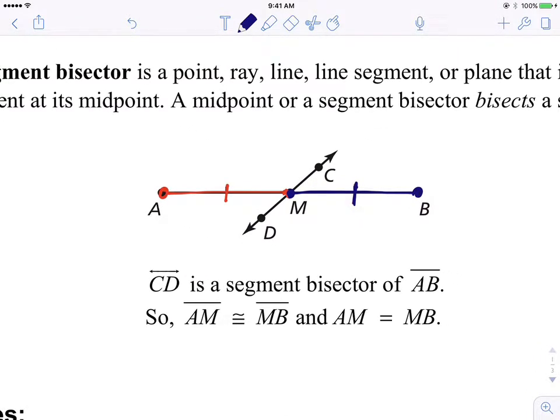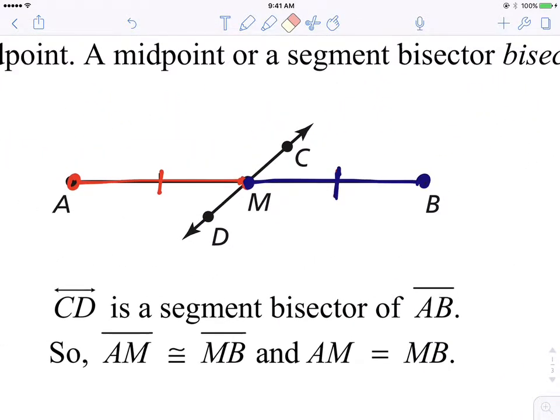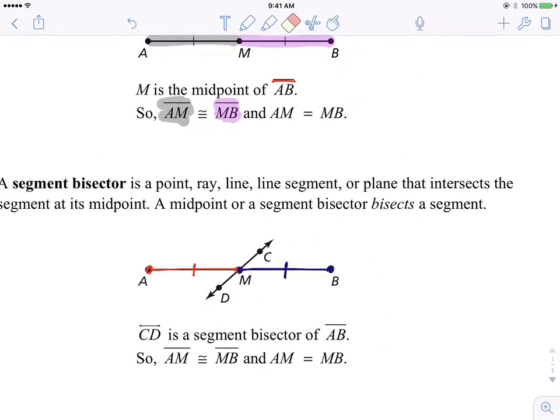And now what we know about line CD, that's what this says, right? It says line CD is a segment bisector. Oh, what's that mean when you're a segment bisector? That means you divide, divide the segment into what? Into two congruent pieces, right? How? Because the segment bisector intersects the segment at its midpoint. Now what's a midpoint do? It divides the segment in half. And so CD is a segment bisector of segment AB, right? Line CD is a segment bisector of segment AB. So segment AM is congruent to segment MB.